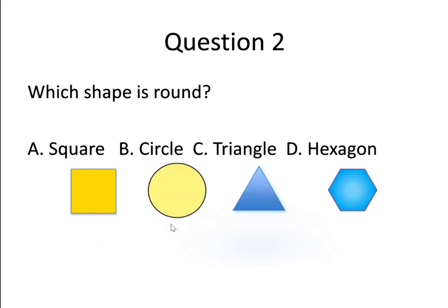Question number 2. Which shape is round? Option A, square. Option B, circle. Option C, triangle. And option D, hexagon.